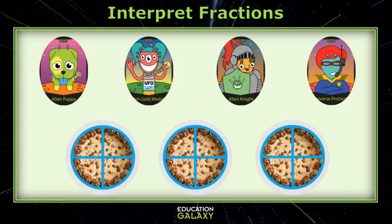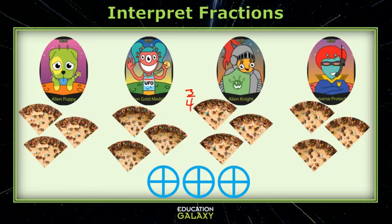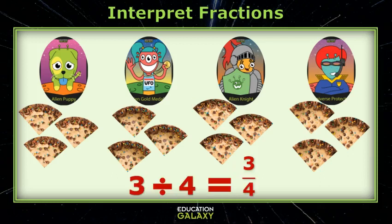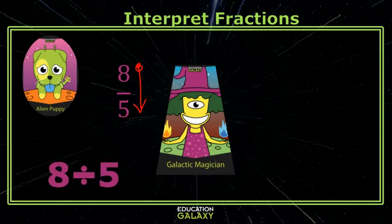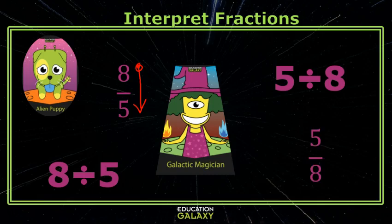I cut the cookie cakes up and give each friend a piece from each. And voila! They all ended up with three-fourths of one cookie cake. Be careful, the order is important — you read the fractions from top to bottom. So eight-fifths would be eight divided by five, but five divided by eight would be five-eighths.